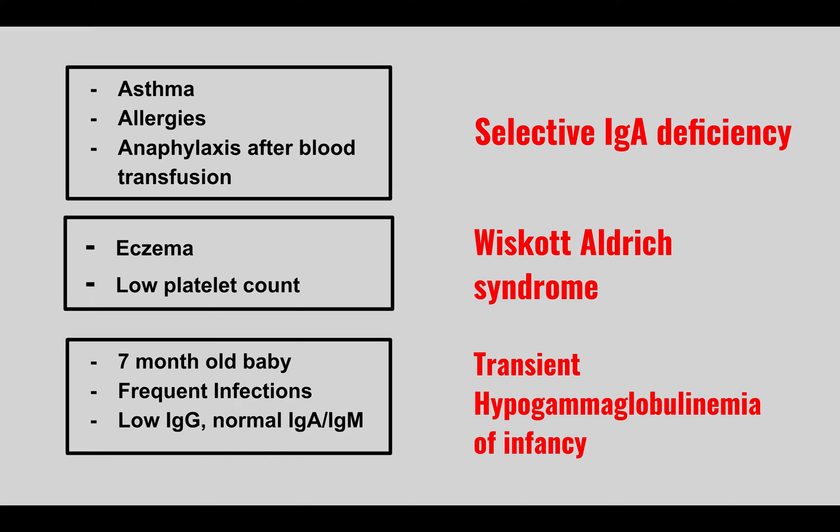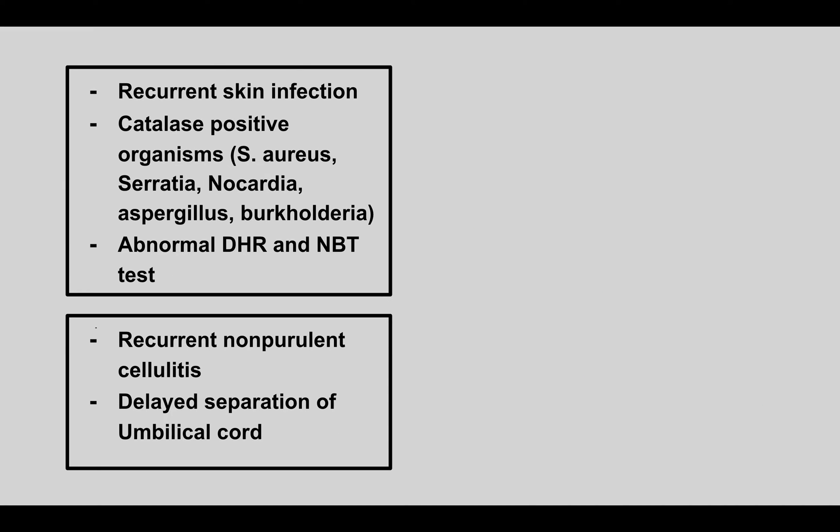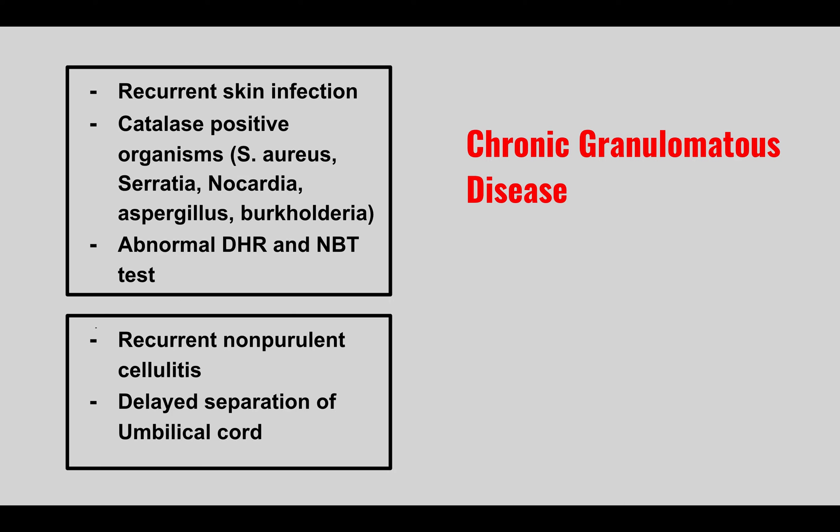The key for transient hypogammaglobulinemia is the seven-month age. The mother supplies the majority of IgG for the first six months, so at seven months the baby no longer has maternal IgG. Recurrent skin infections with catalase-positive organisms — Staph aureus, Serratia, Nocardia, Aspergillus, Burkholderia — along with an abnormal dihydrorhodamine test and abnormal NBT test is chronic granulomatous disease (CGD), a NADPH oxidase deficiency causing an inability to generate reactive oxygen species to kill these organisms.